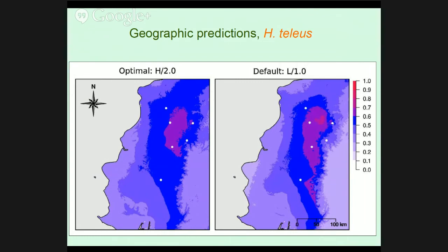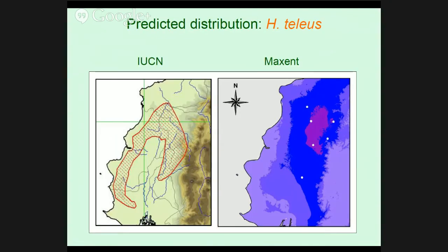Looking at the maps, we have the optimal settings on the left and the default on the right — there are certainly differences. The optimal settings are not quite so clumped in the center north, and on the lower left it's doing a better job picking up areas on some low coastal ranges where the species has actually been found. We then compare with what I and other specialists put together for the IUCN range map. After applying a threshold and looking at deforestation and protected areas, I think this is a very helpful approach for species for which we don't know very much.